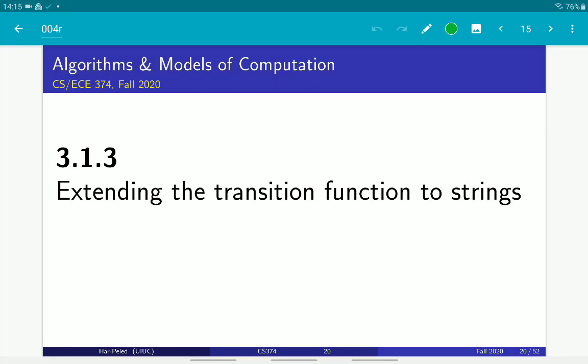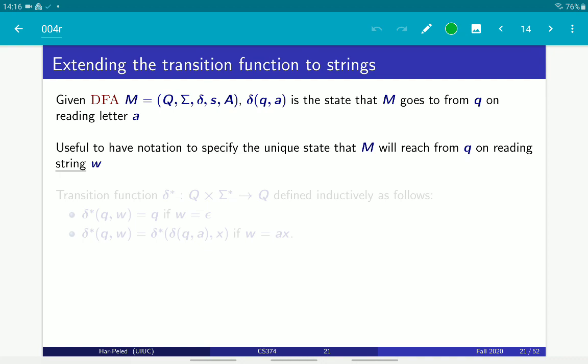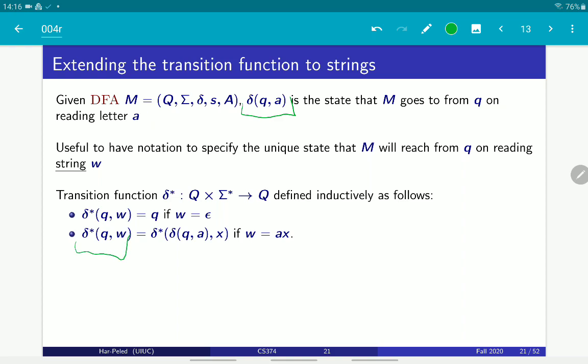It would be useful to speak about transition functions as working on strings, instead of working on single letters. So the formal definition is that you give me a DFA defined formally, and delta QA is the state that we end up in if we start at state Q under the input A. We would like to now define it for strings. Delta star QW, the star is for designating the fact that this works on strings, not on a single character, is the state the DFA ends up in if you start in Q and it reads the string W.